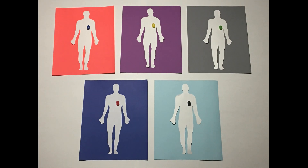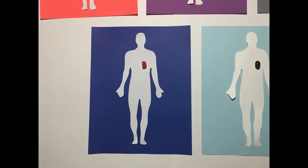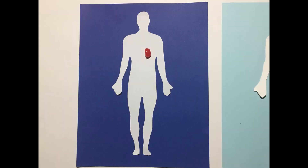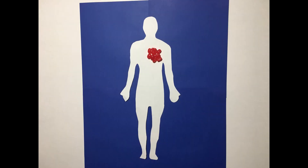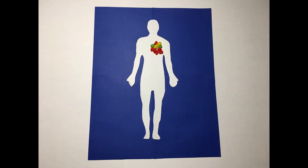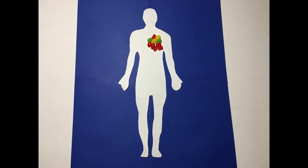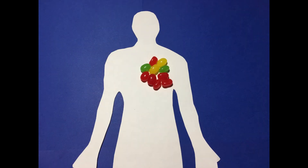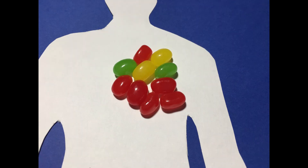The same tumor type can be different between individual patients, and this is known as inter-tumor heterogeneity, as represented by the different colored jelly beans. Interestingly, the cells constituting a tumor within an individual can appear the same. However, upon closer inspection, cells within this tumor can have very different characteristics, and this is known as intra-tumor heterogeneity.